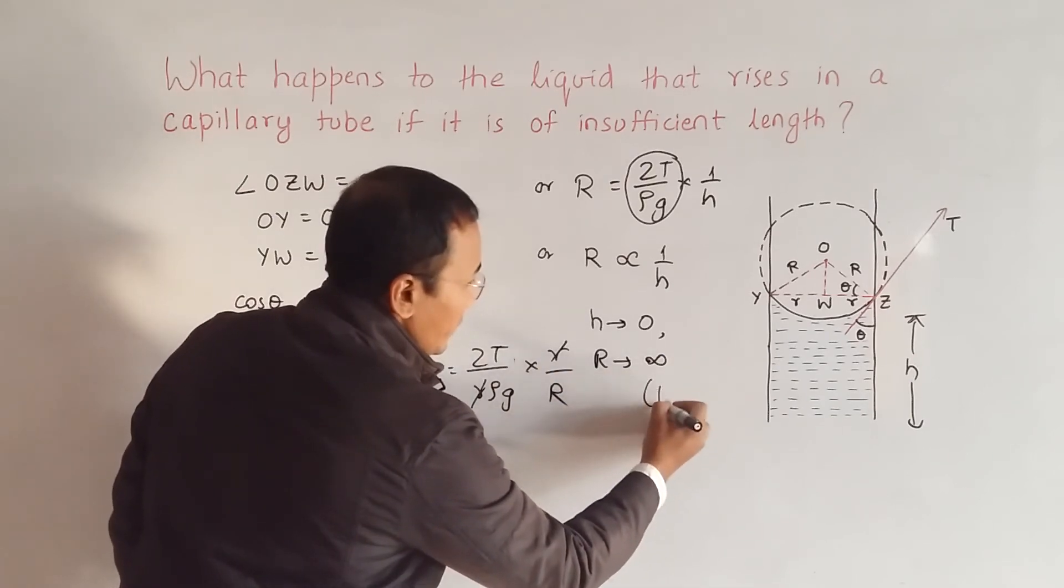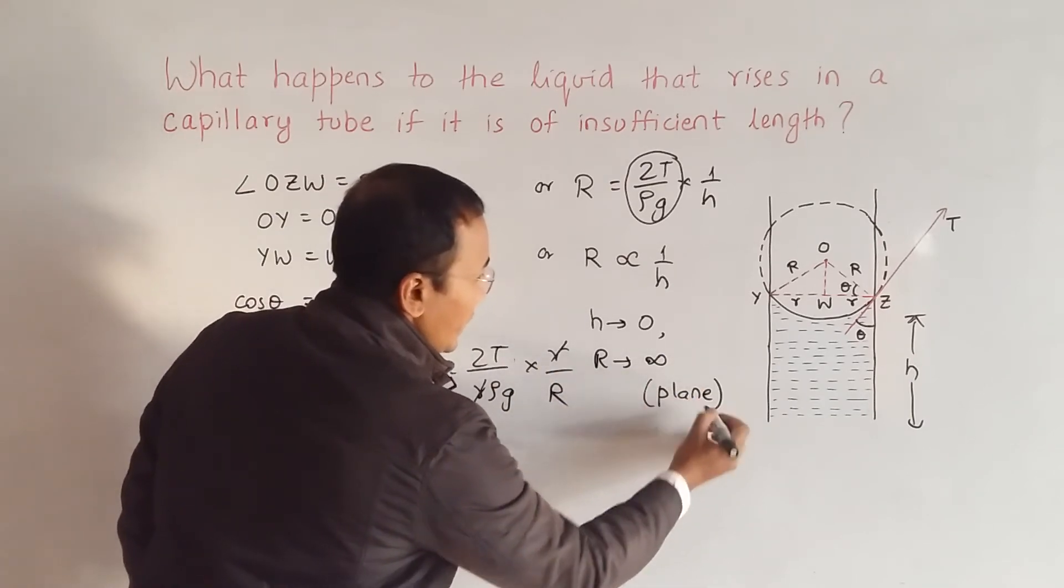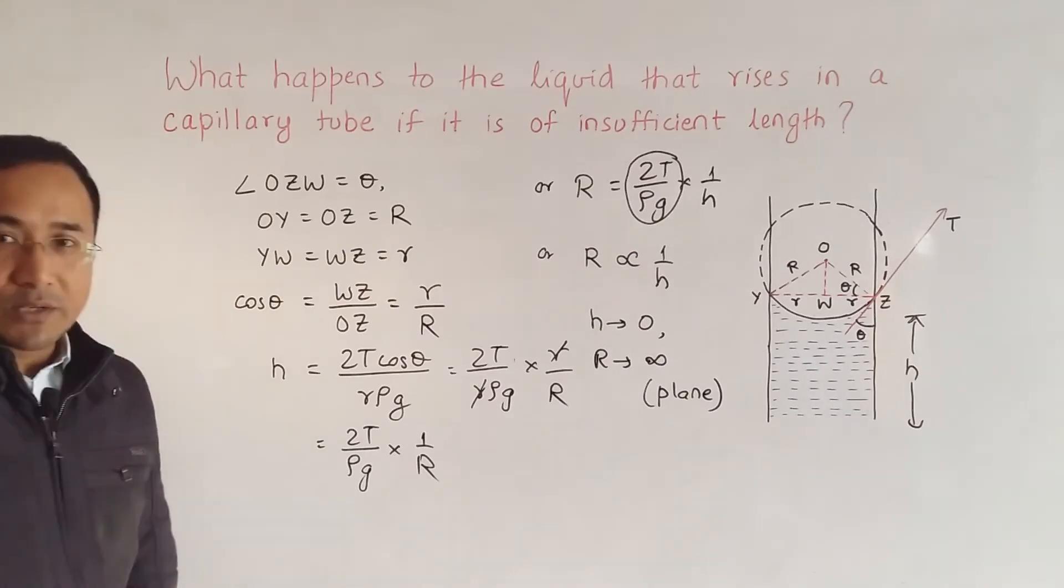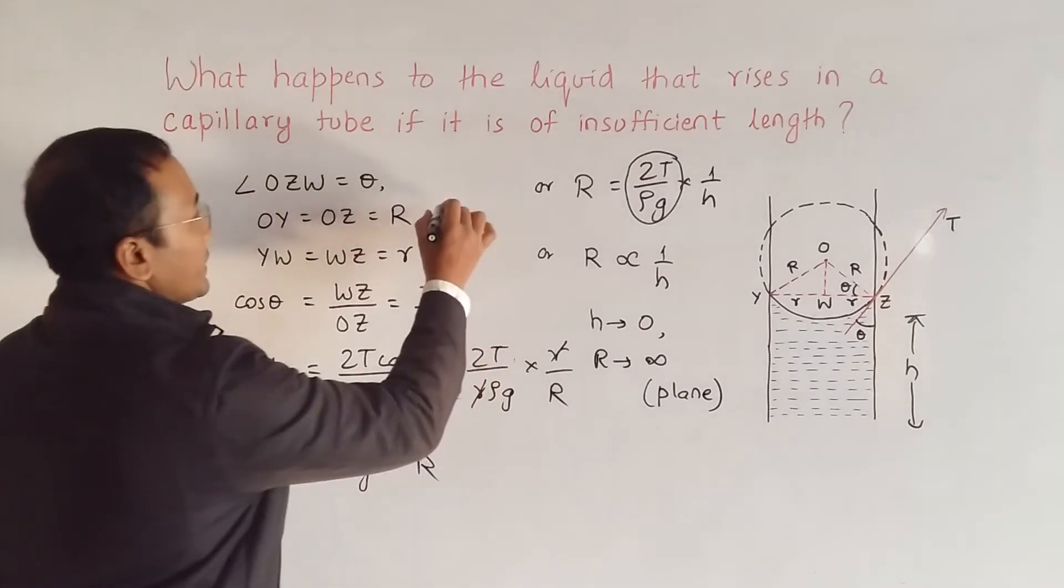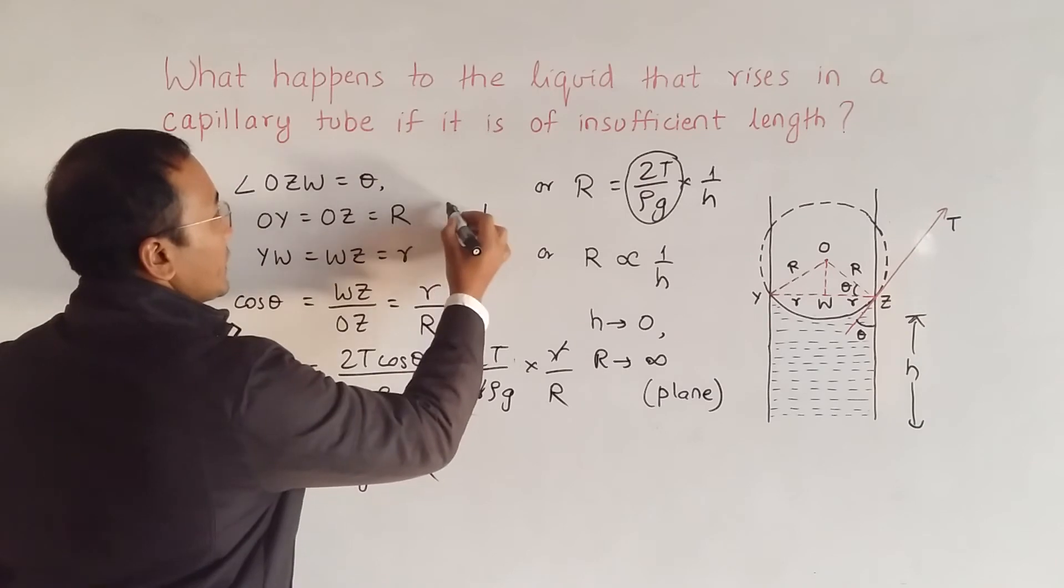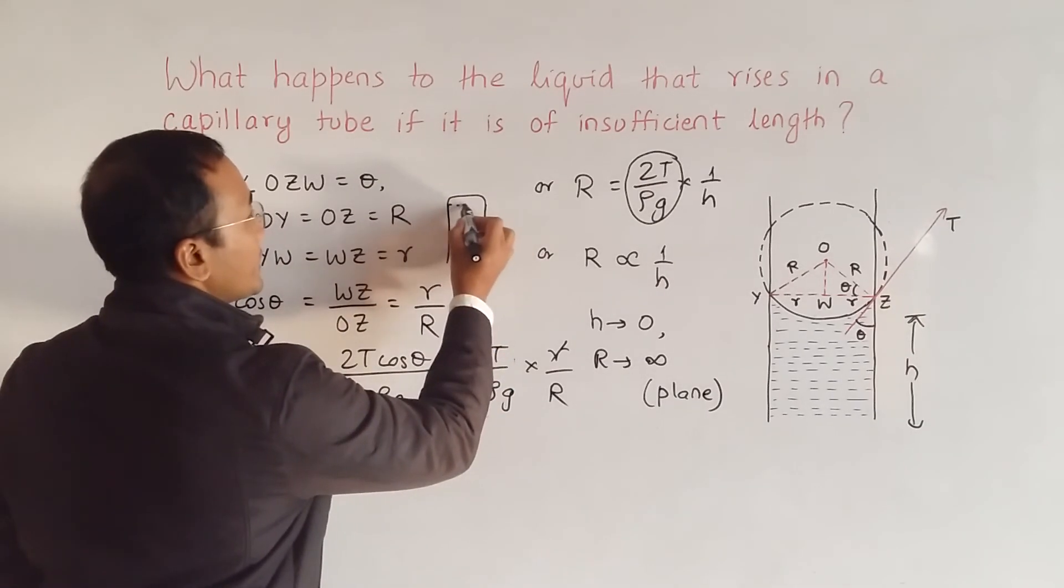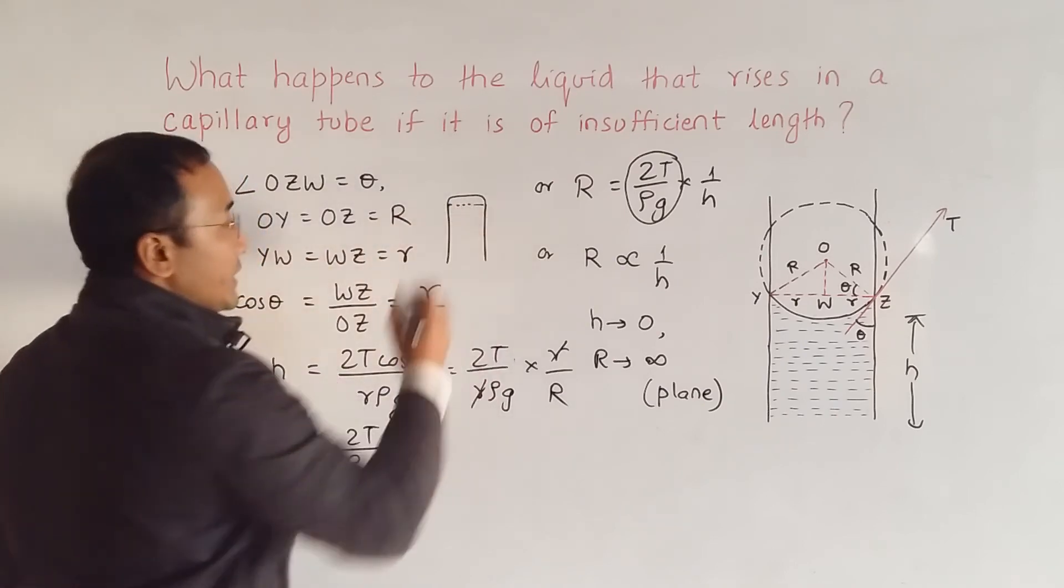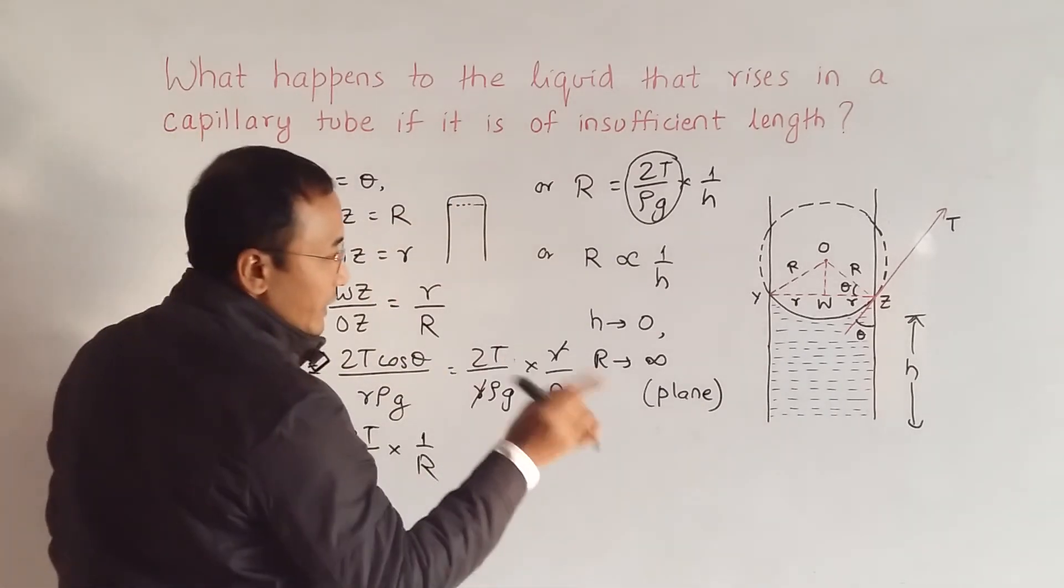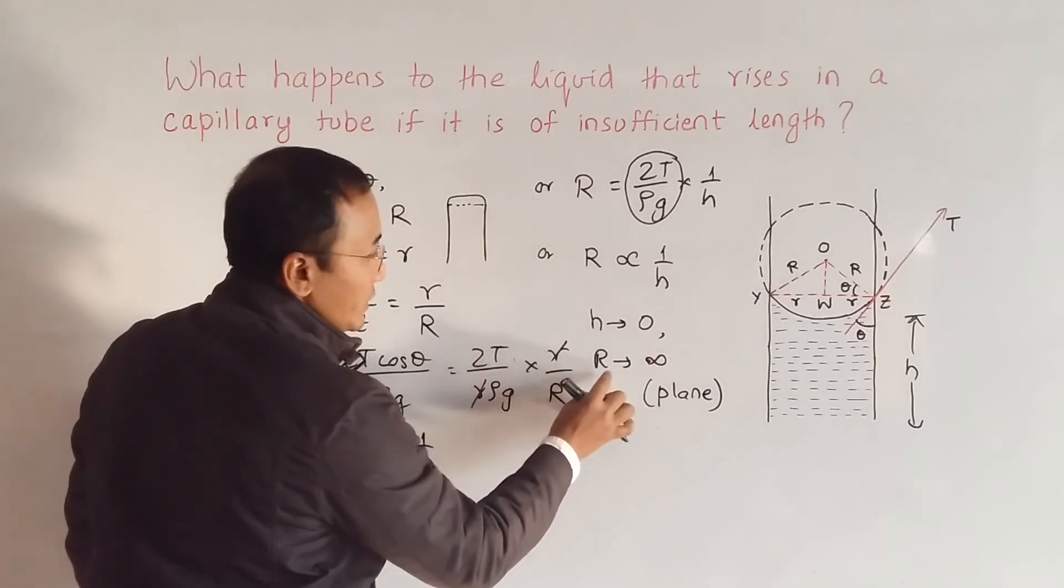So if we have to have overflow of liquid, at least we must have this: if this is the upper end of the capillary tube, the liquid level should happen somewhat like this. This is the top surface, and it must rise like this.